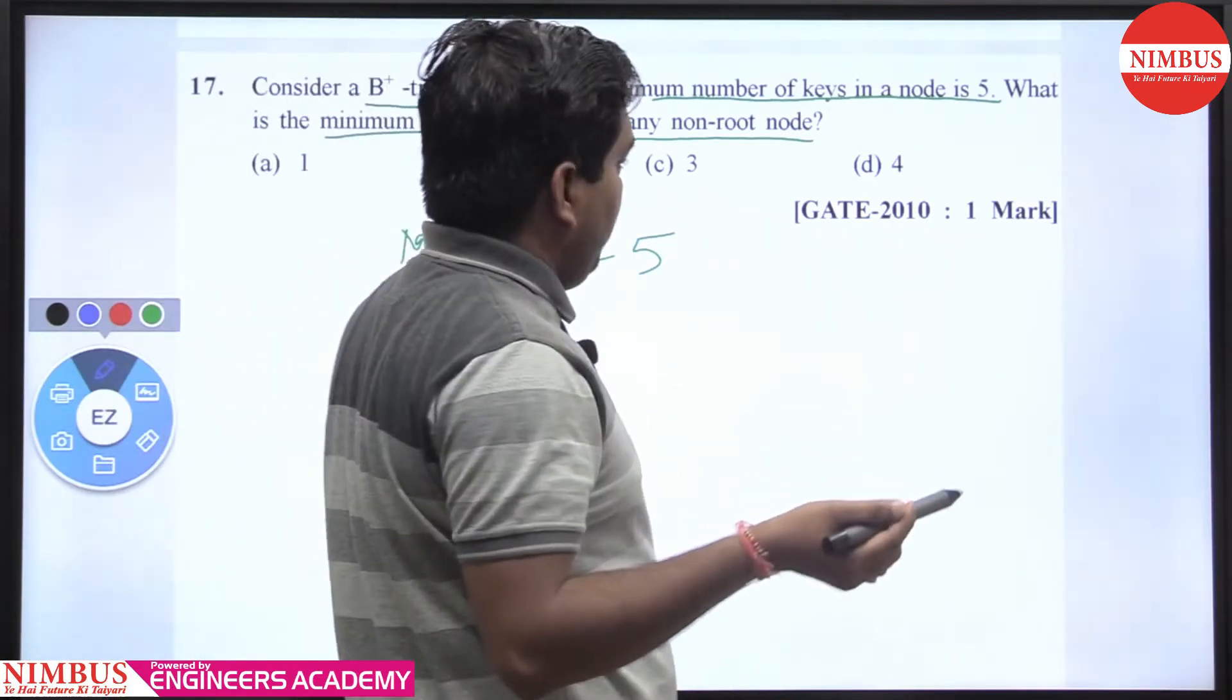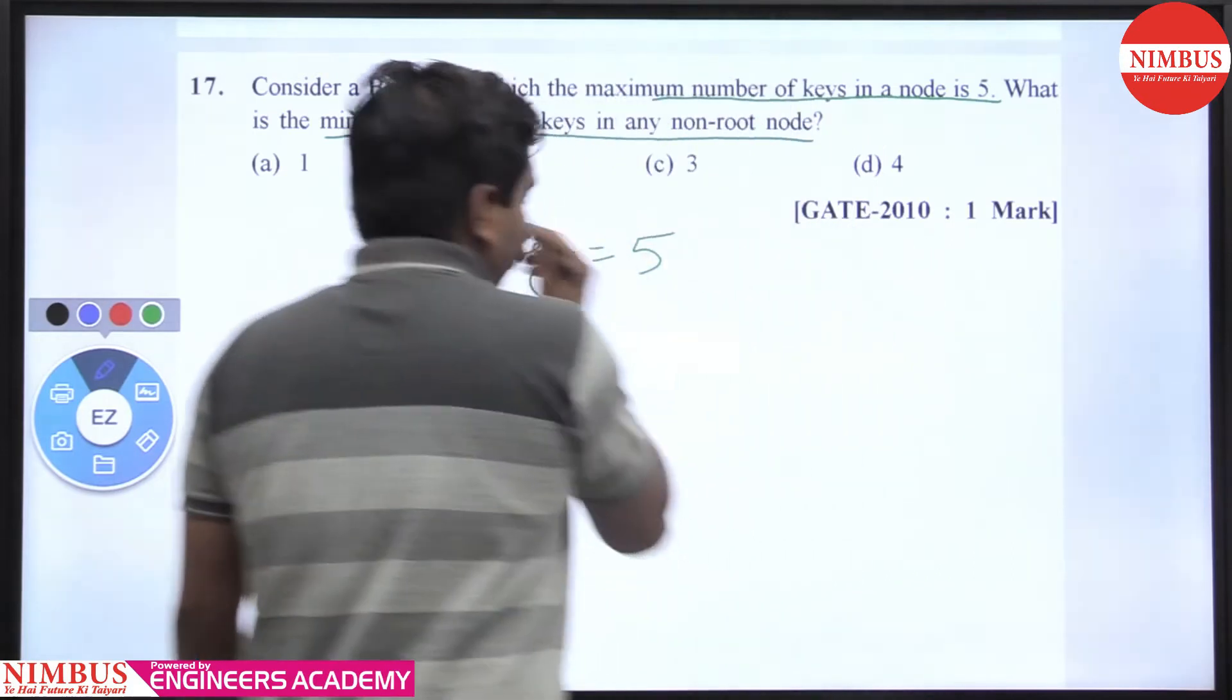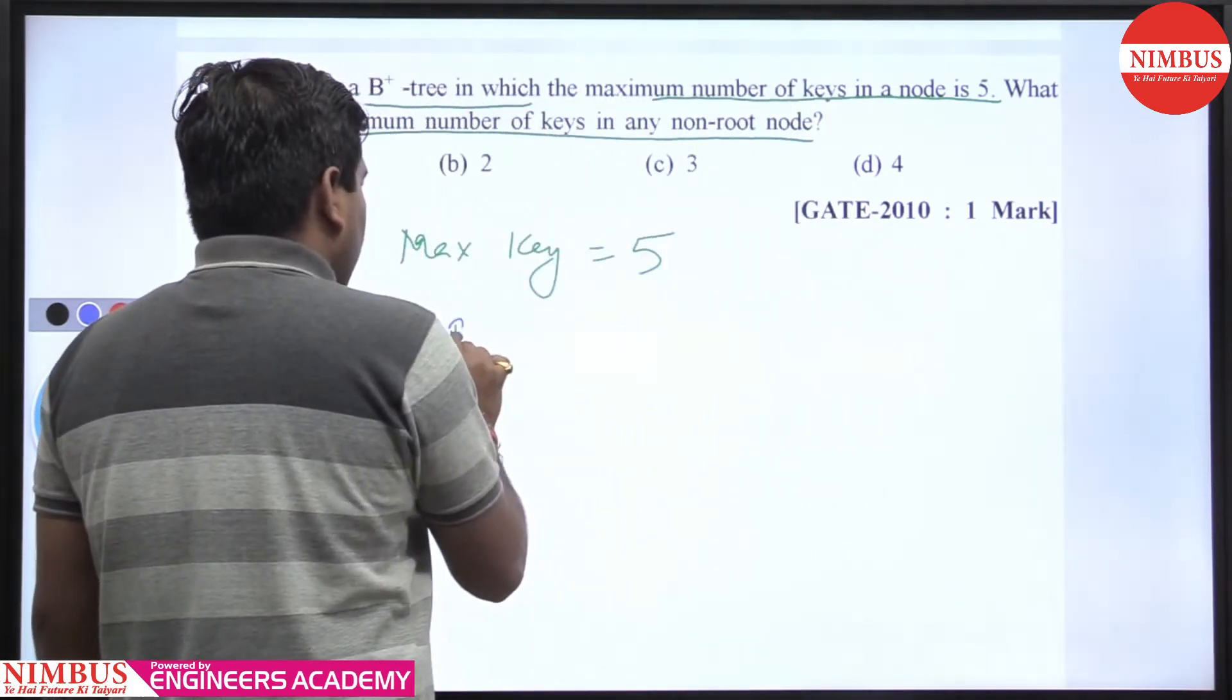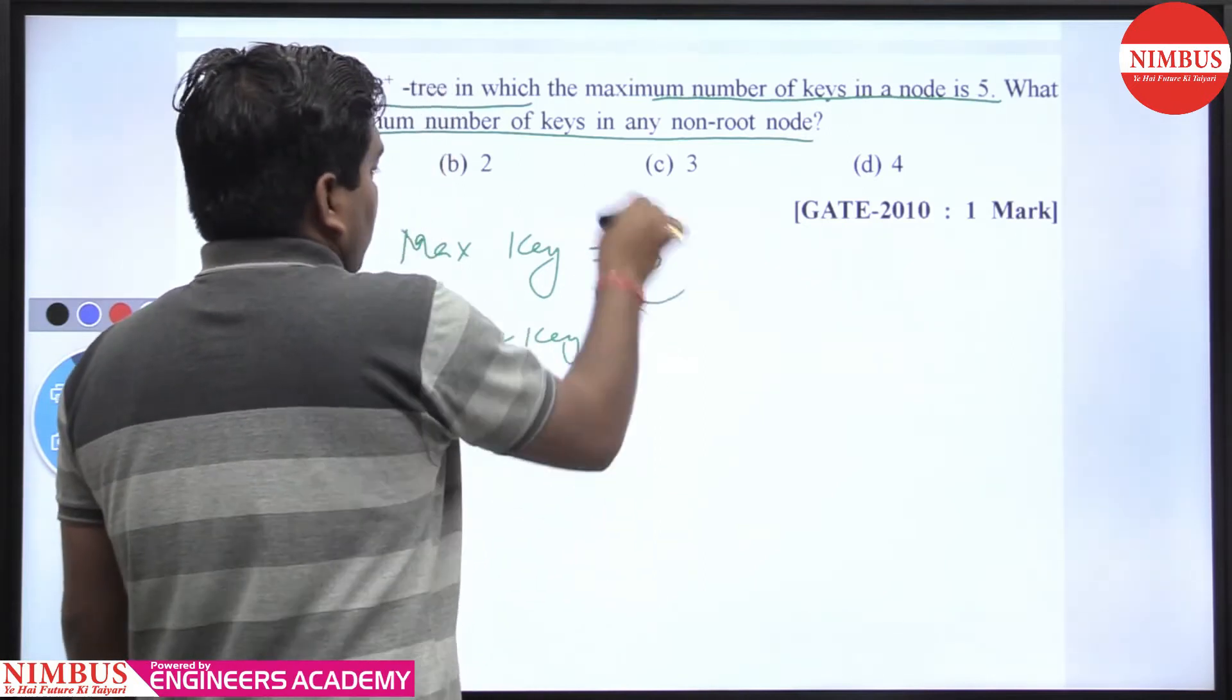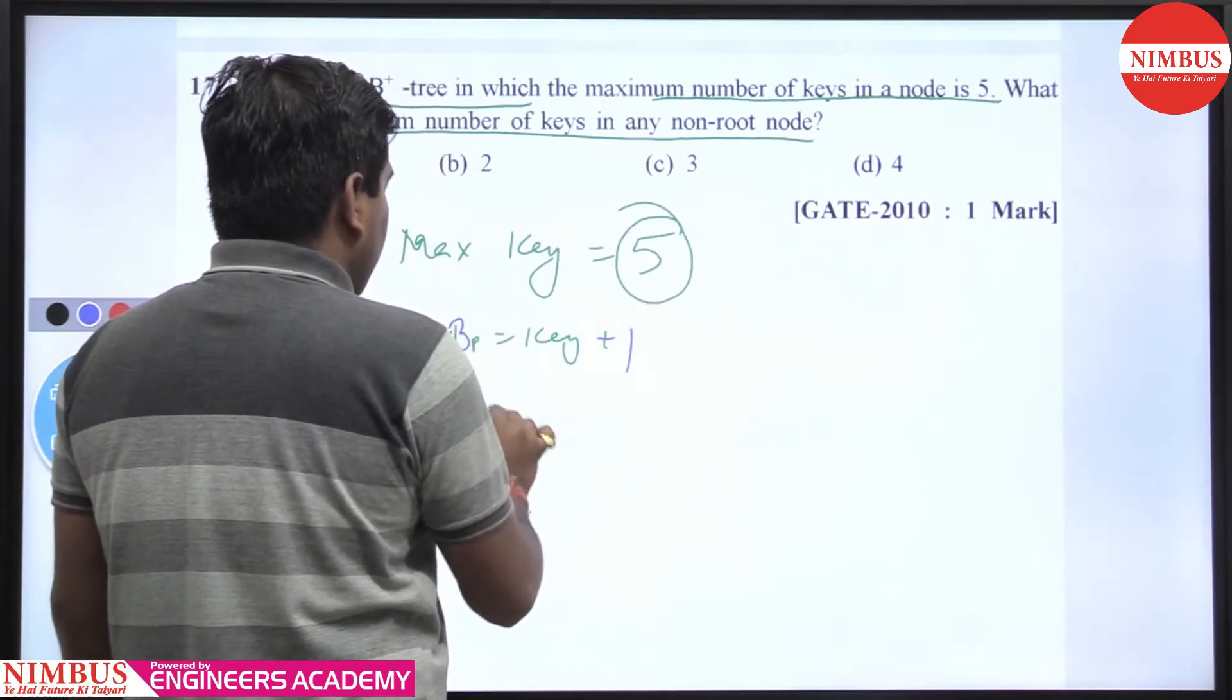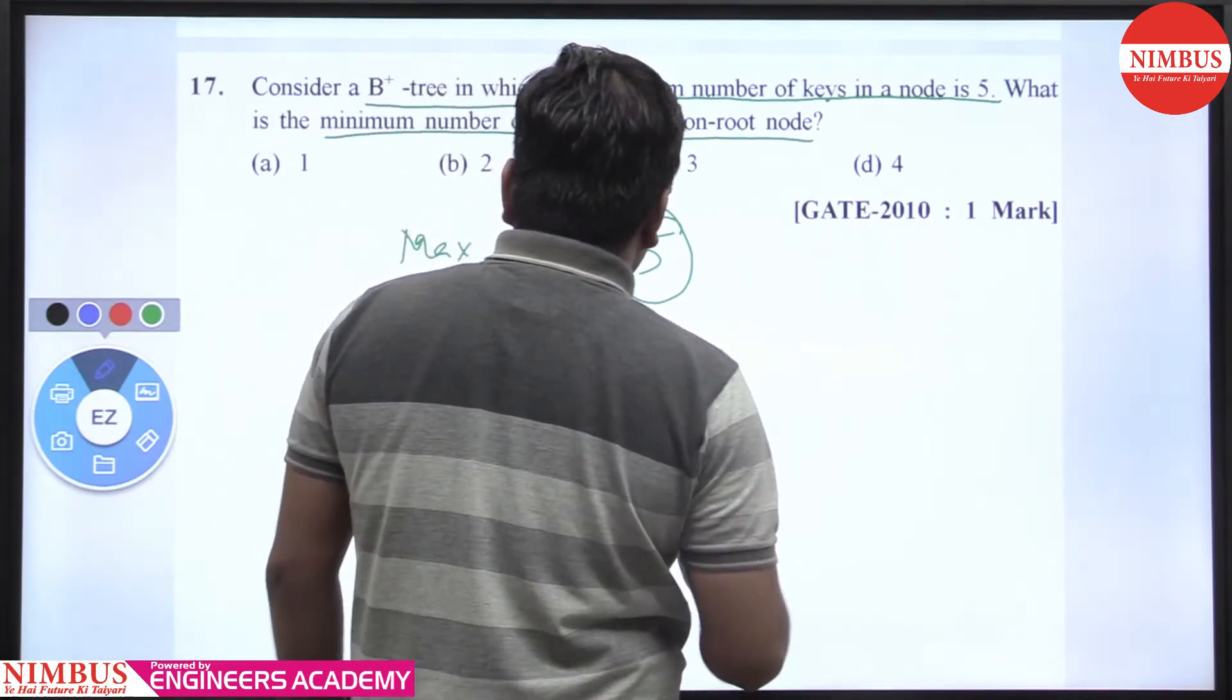First, let me explain about B+ trees. What is the difference between keys and block pointers? Block pointers equal keys plus 1. If the maximum number of keys is 5, then the maximum number of block pointers is 6.